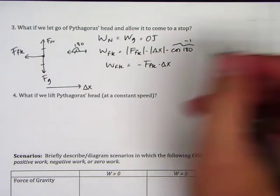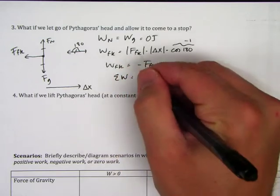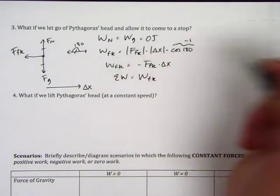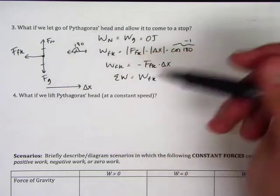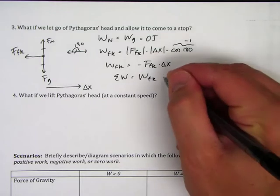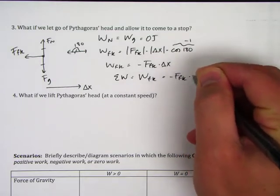So the work done by friction is negative FFK times delta X. Now, the network in this case is the work done by friction alone because there's no other forces doing work on the object. So the network is negative FFK times delta X.